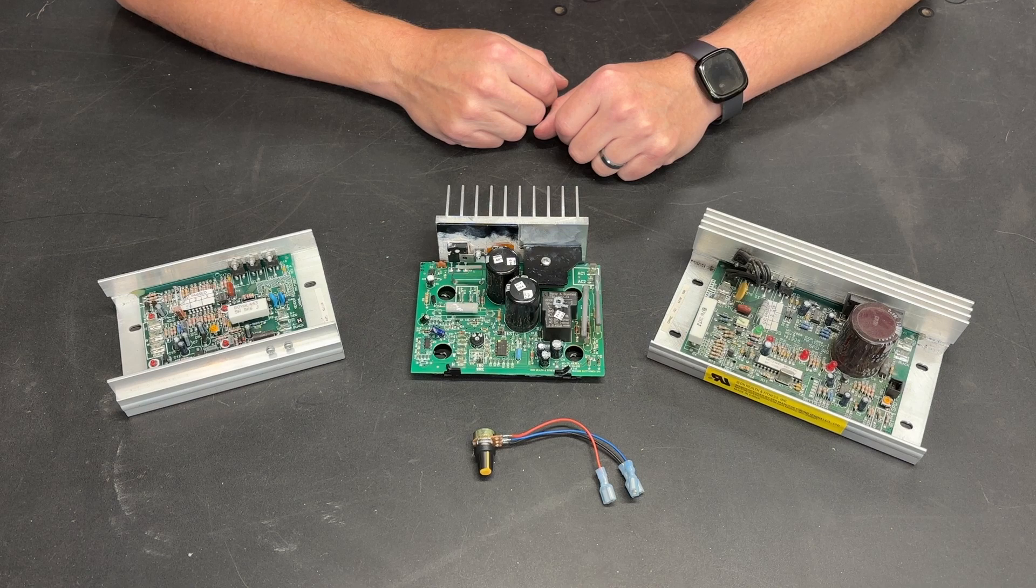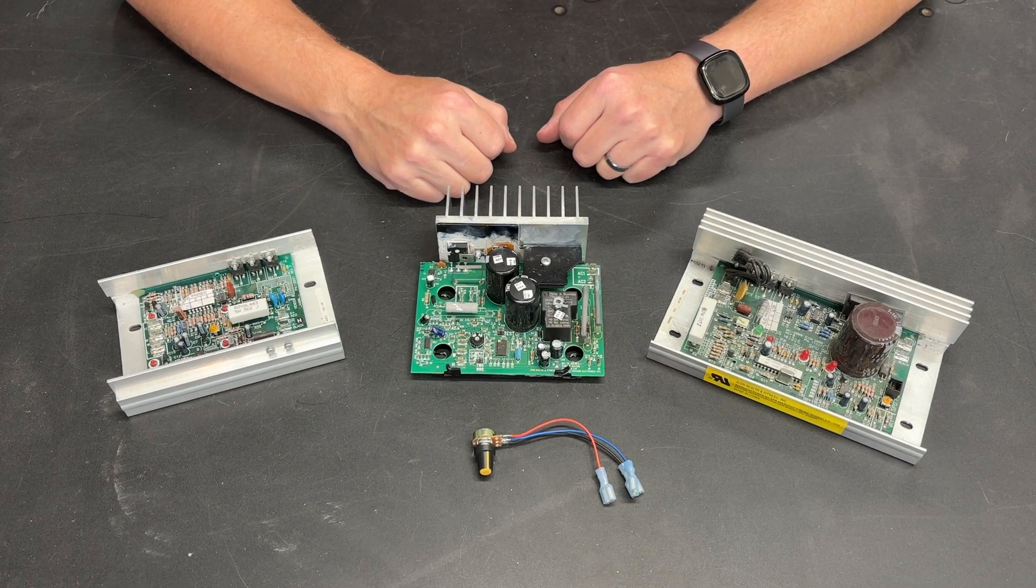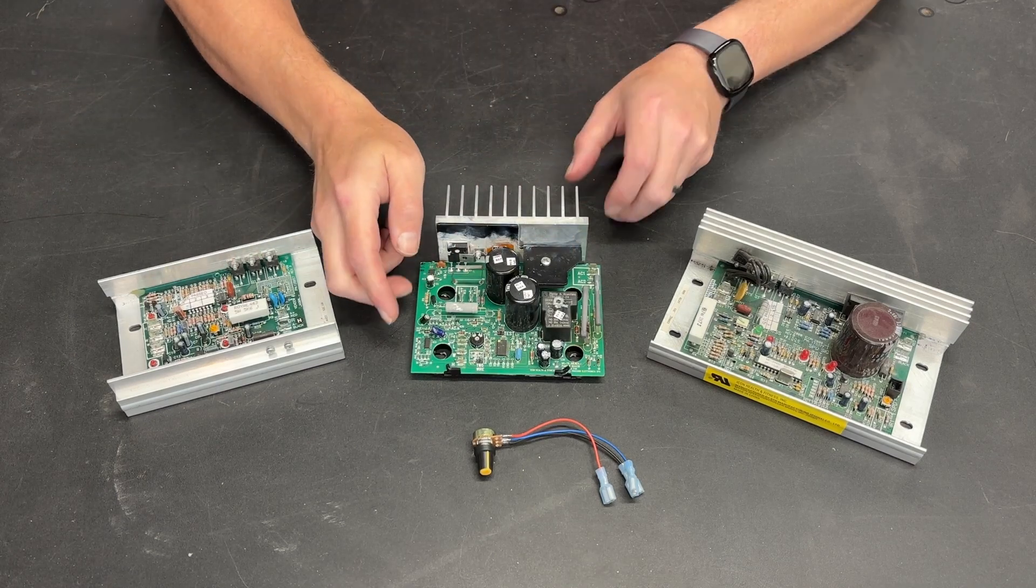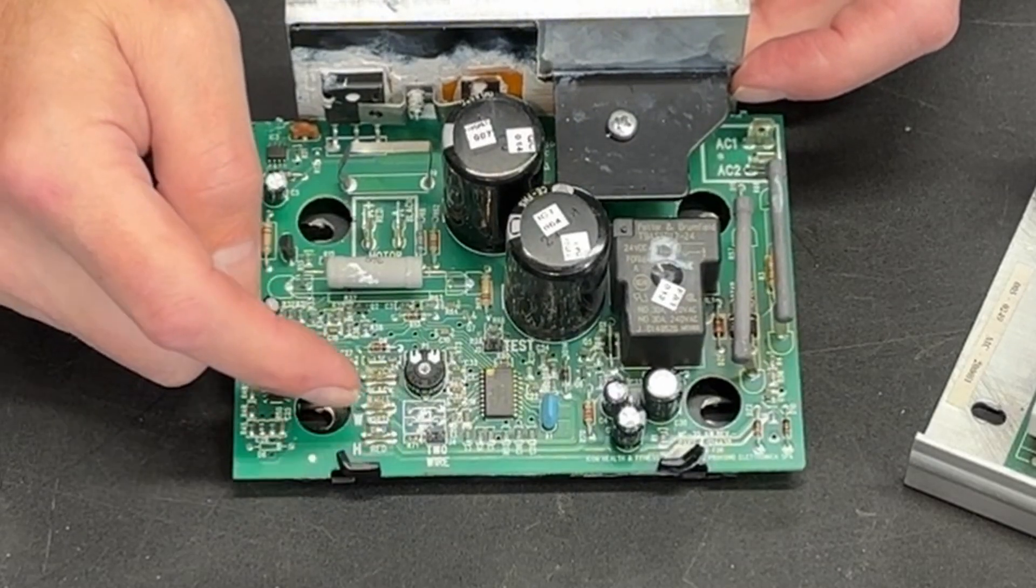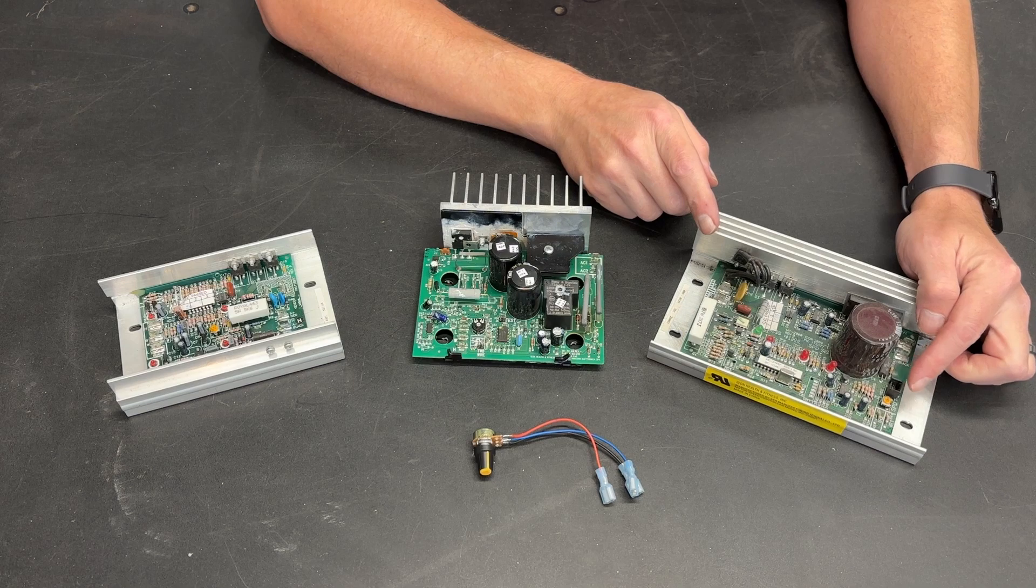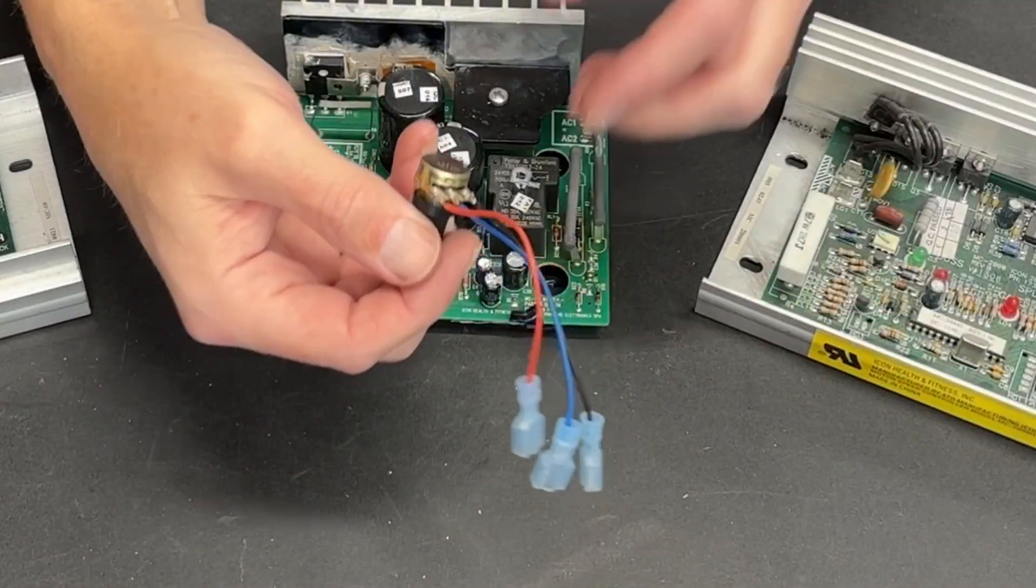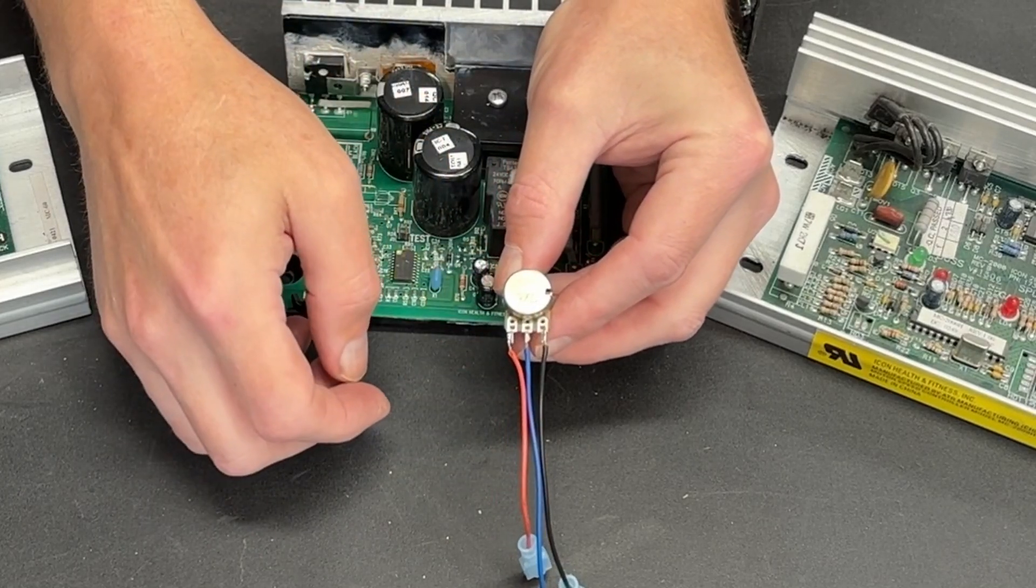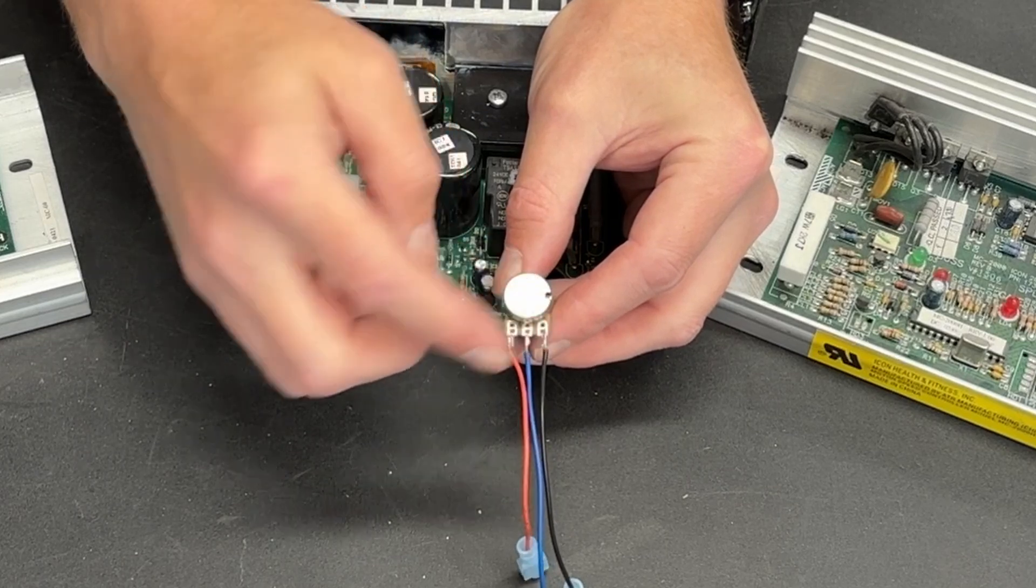All you need is a potentiometer and you can run these boards outside of a treadmill. All three of these boards have labeling with spades coming off that say H, W, and L. The W is always the middle post, and the H is on one side and the L is on the other.